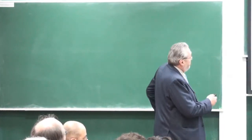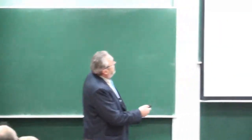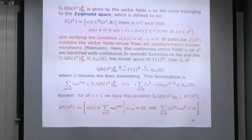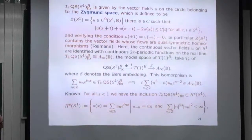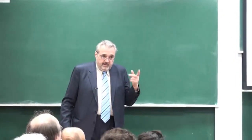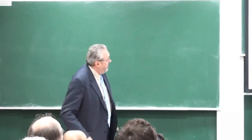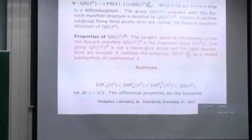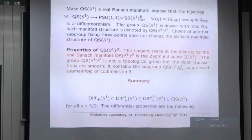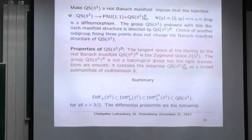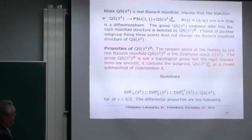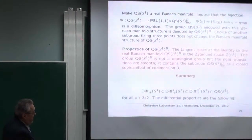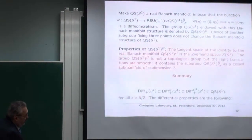I can write more things down. In Fourier coefficients, A∞ has an n³ factor appearing — that screams to me that there is an H^{3/2} space I should look at. H^{3/2} will play a major role. The tangent space to the identity of the real Banach manifold (without fixing) is the Zygmund space; with fixed complex structure it is the Zygmund space that kills three points. This group is not a topological group, but right translations are smooth. QS_fix sits as a closed submanifold of codimension three.